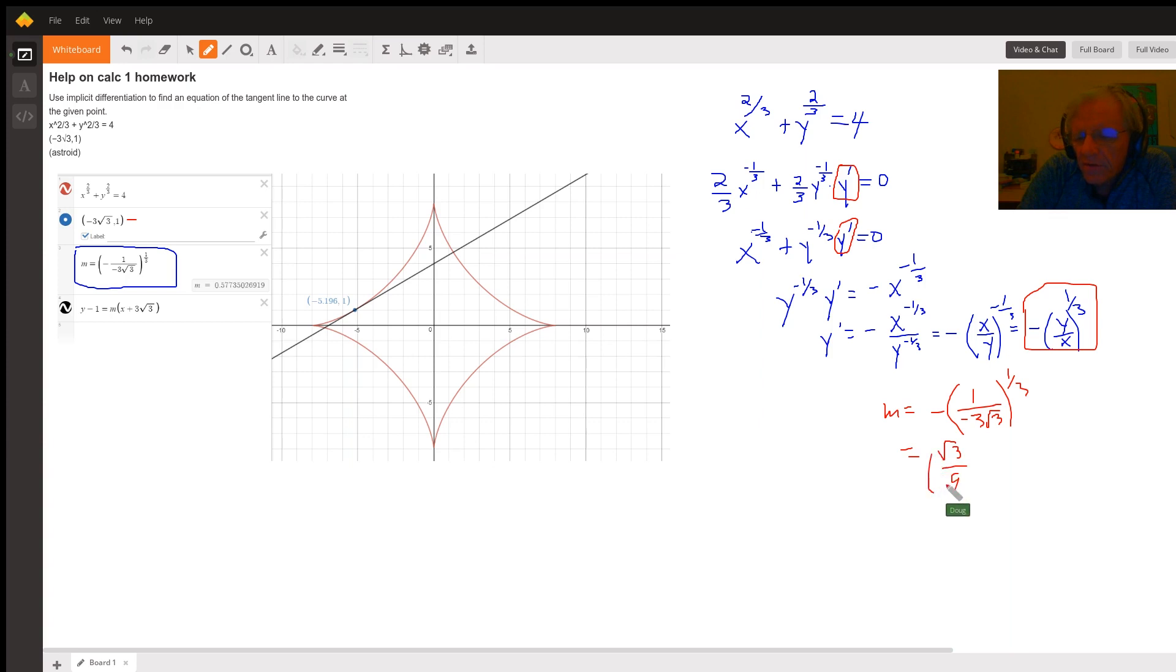But still, raised to the one-third power. Either way, you get a decimal approximation. And after writing the equation of the tangent line, you can see that looks like it really is the tangent line.